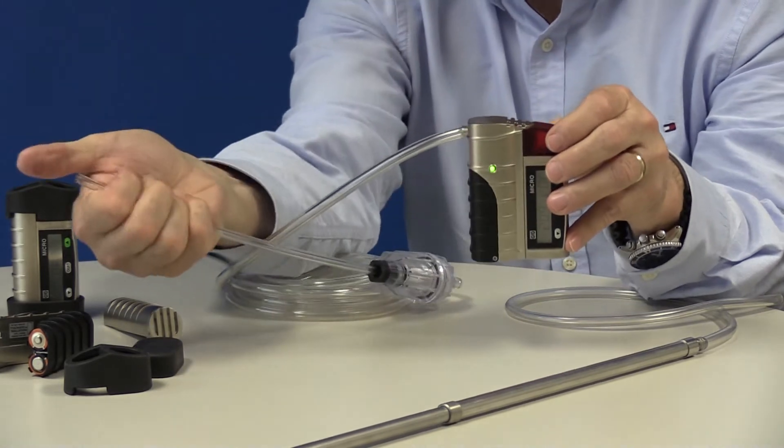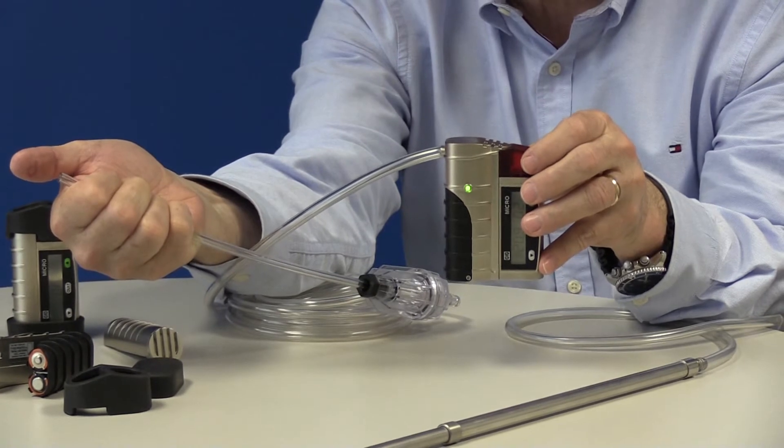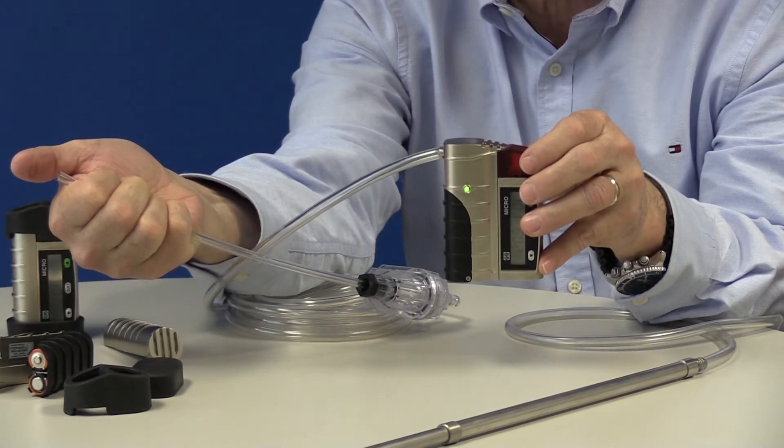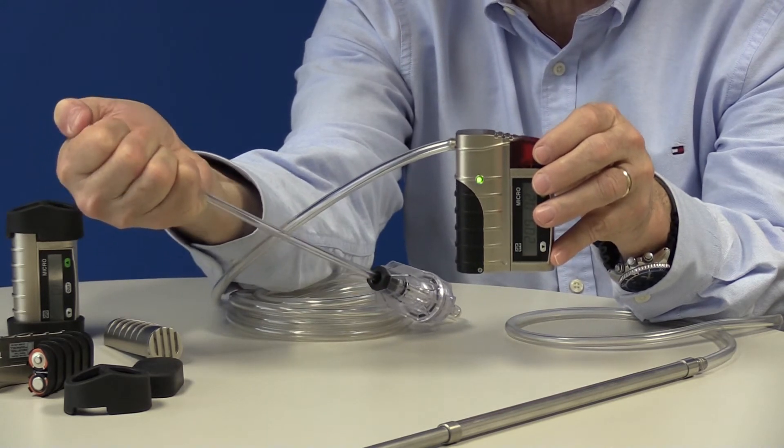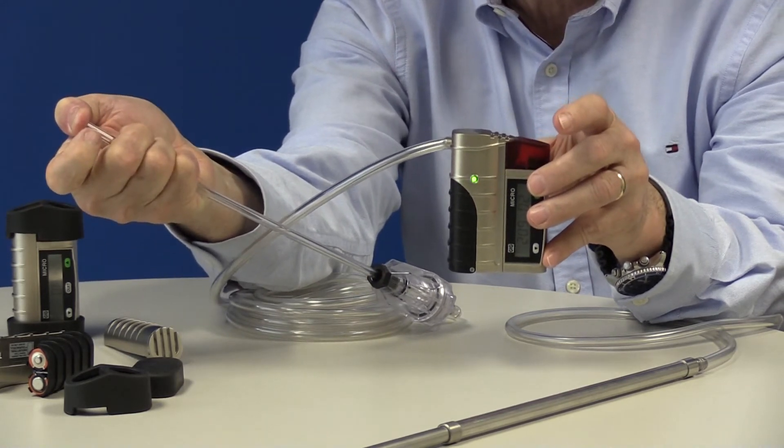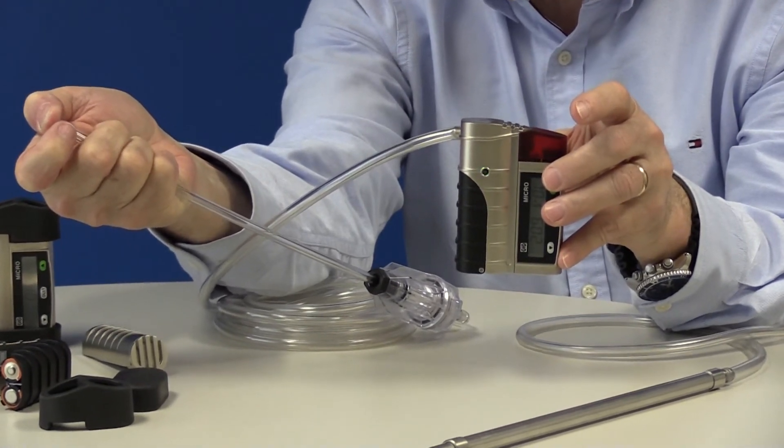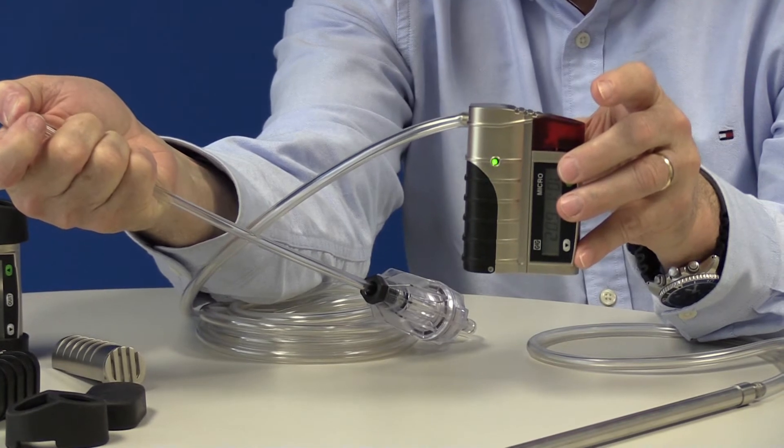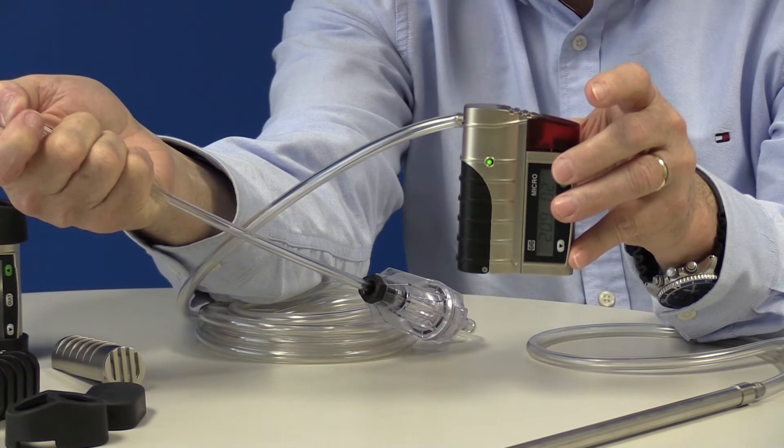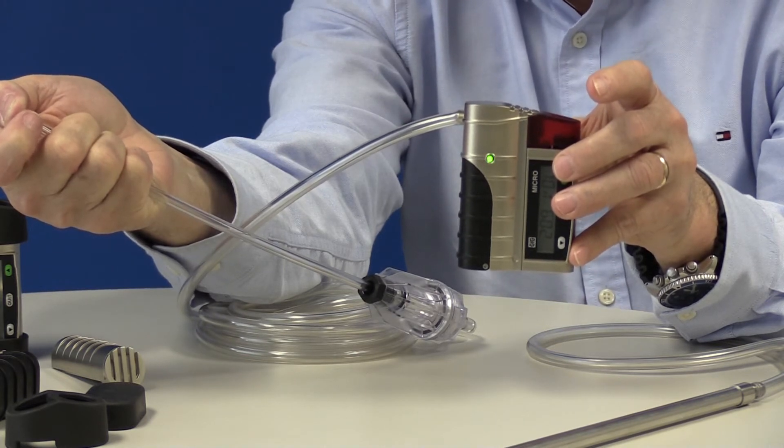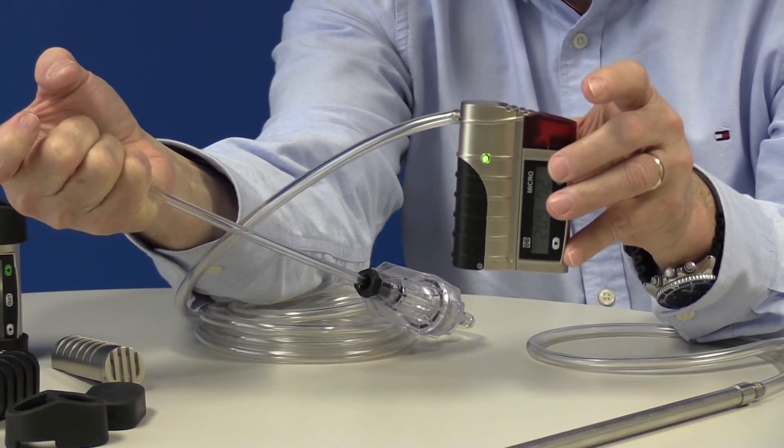The final step is to make sure that you don't have any blockages or leaks in the sample drawing system. And the way that we're going to do that is to cause a leak by blocking the end of the probe. So you'll hear the pump struggle and eventually it will either shut down completely or labor and barely be running. And the green light will begin to flash to alert you to the fact that there is a blockage in the line.